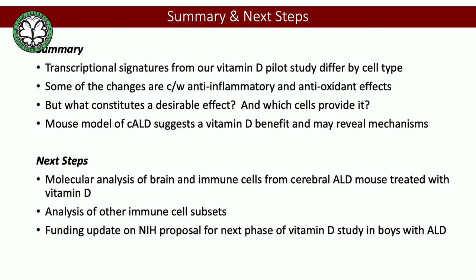To summarize: I showed you the transcriptional signatures from our vitamin D pilot study. What we can see right now is that it clearly differs by cell type. Assuming what we're seeing are vitamin D signatures — many of these features are consistent with the broader literature on vitamin D — some changes are consistent with an anti-inflammatory and antioxidant effect as we proposed. But it's more complicated than we thought: it's affecting different cells in different ways.